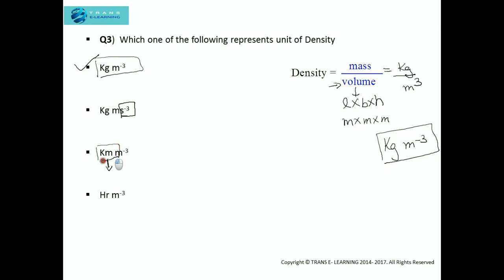The third option has kilometer, which is a unit for length, and we don't have length alone in density. The fourth is hour, a unit for time. We don't have time in the formula of density. So these three are incorrect, and the correct answer is the first one.